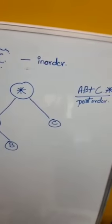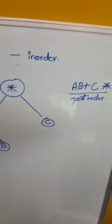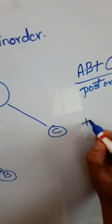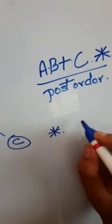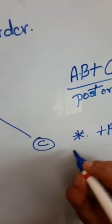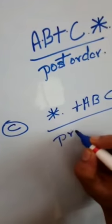Now, the same expression written in pre-order format becomes: star, then plus, a, b, and finally c. In pre-order, the operator comes before its operands at every level of the tree, so the root star appears first, followed by the left subtree's operator and operands, then the right subtree.